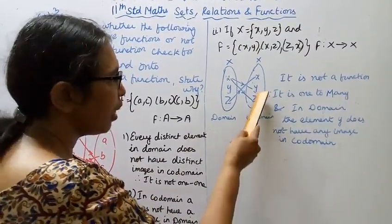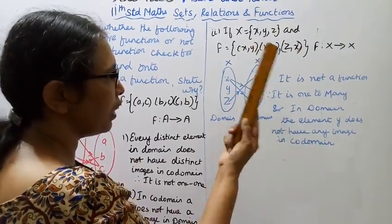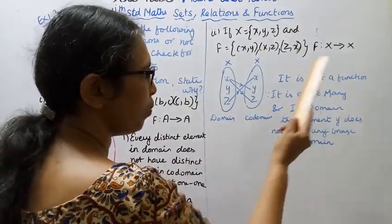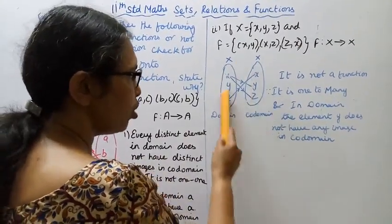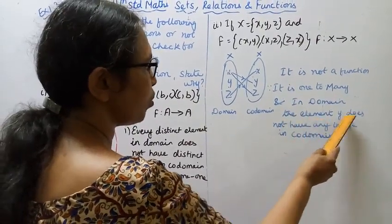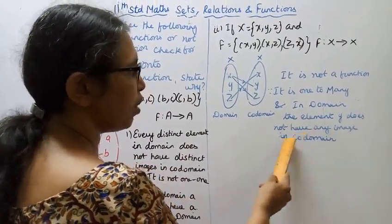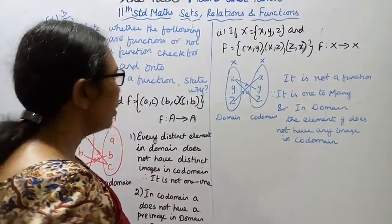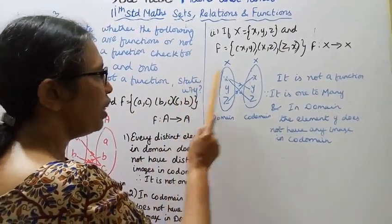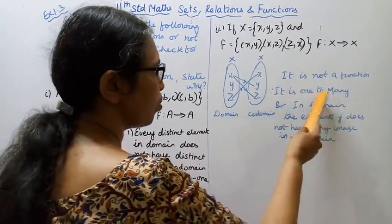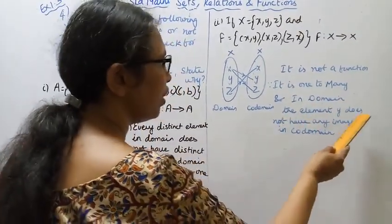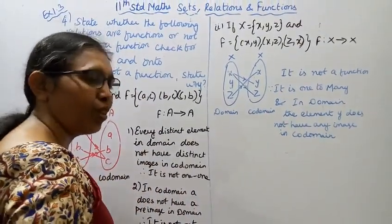It is not a function. Since it is one to many and in domain the element y does not have any image in codomain. It is not a function. It is one to many and in domain the element y does not have any image in codomain.